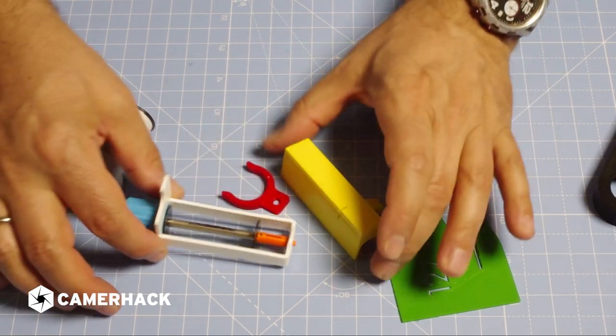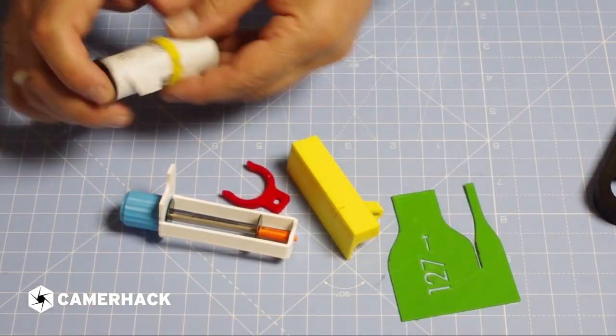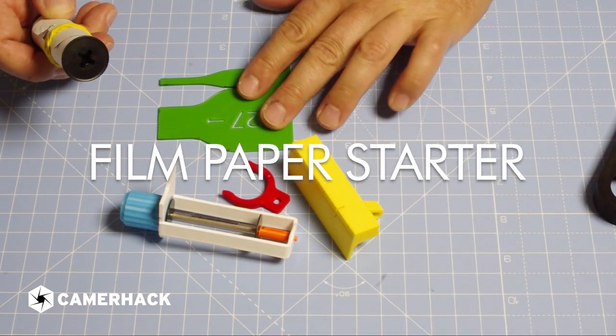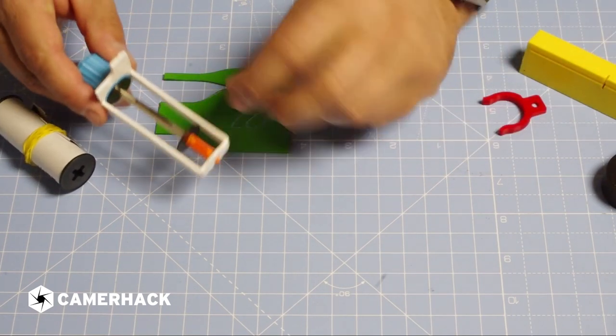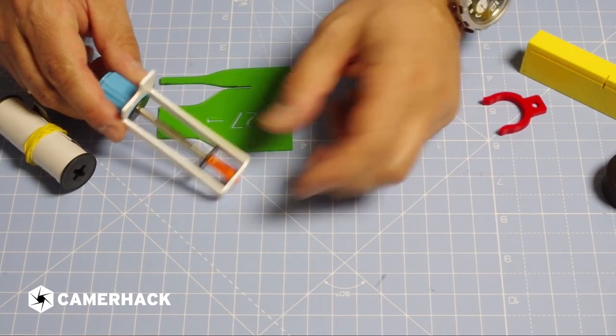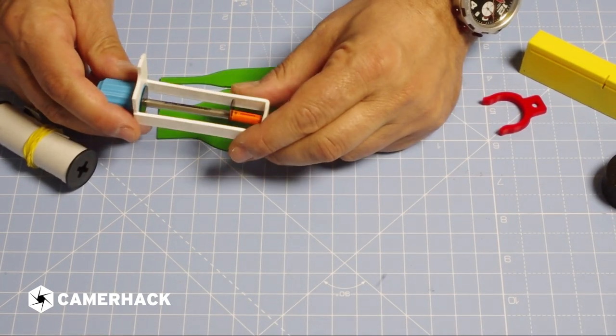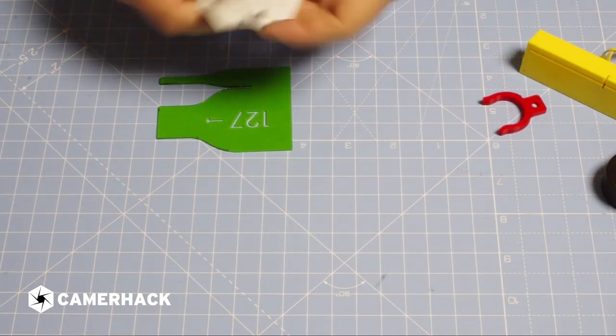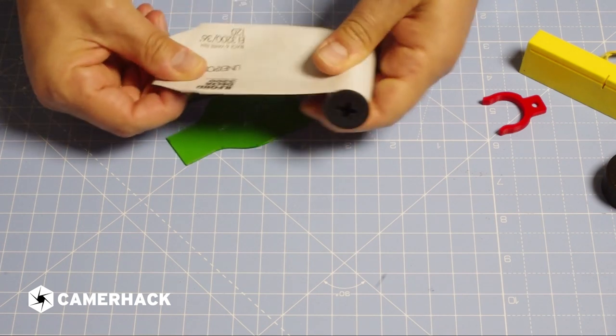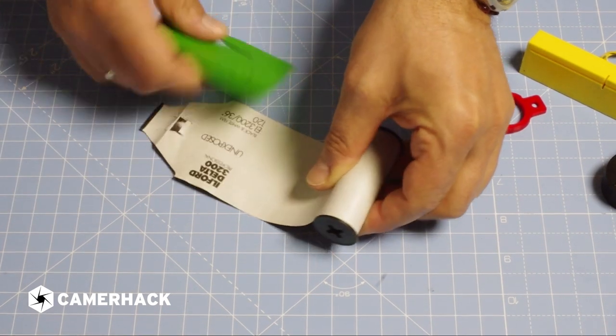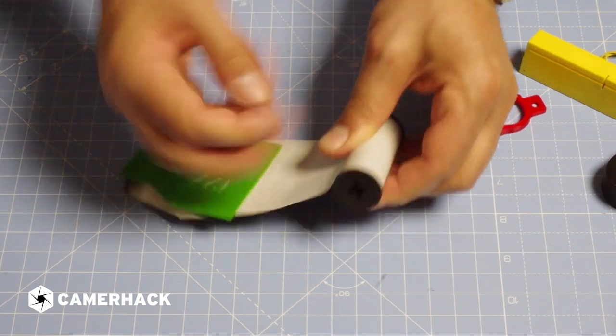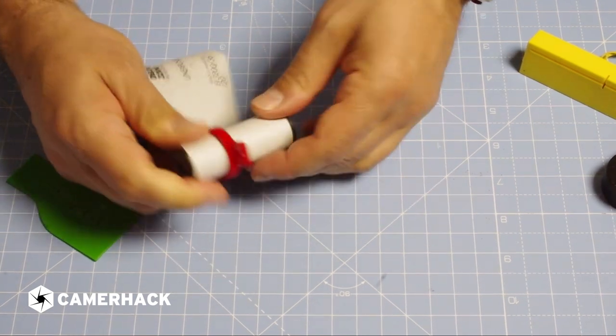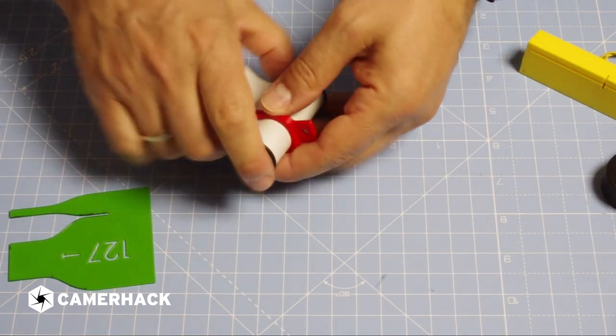Before we do this process we need to prepare the film tail with this shape to go inside the two slots that you have. To prevent the film from unwinding from the spool you just block it with this clip.